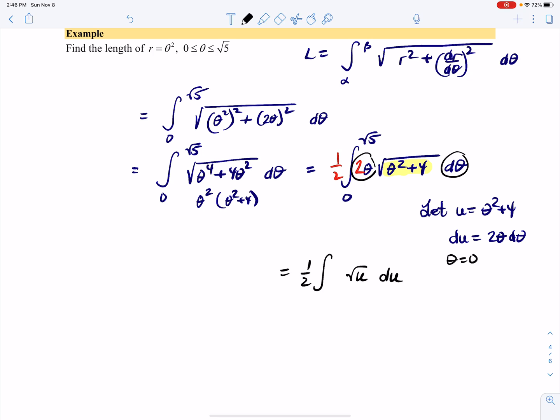When θ = 0, u = 0² + 4 = 4. When θ = √5, u = (√5)² + 4 = 9.